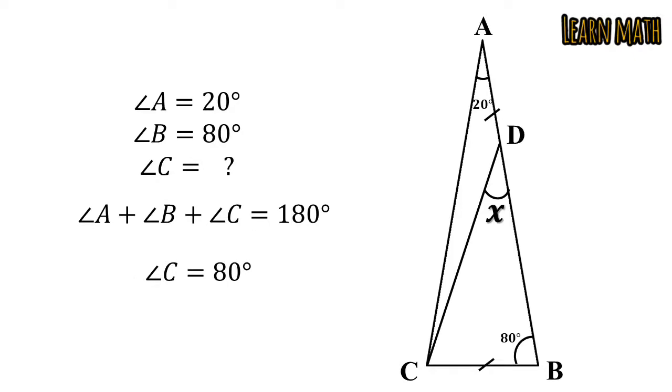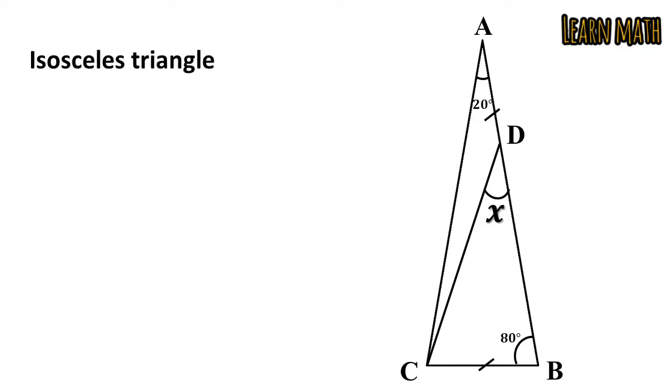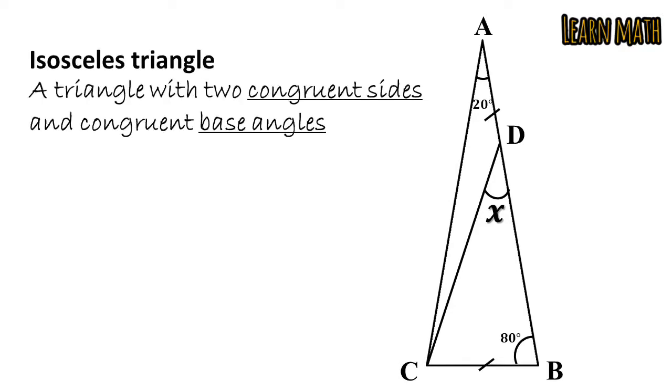What is an isosceles triangle? A triangle with two congruent sides and congruent base angles is an isosceles triangle.